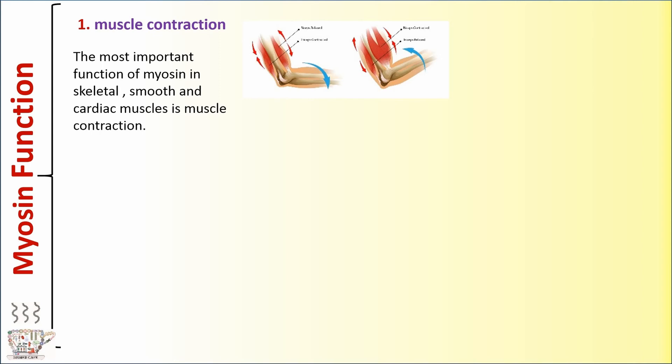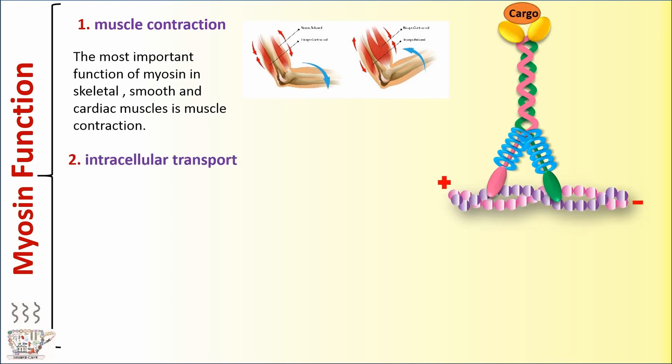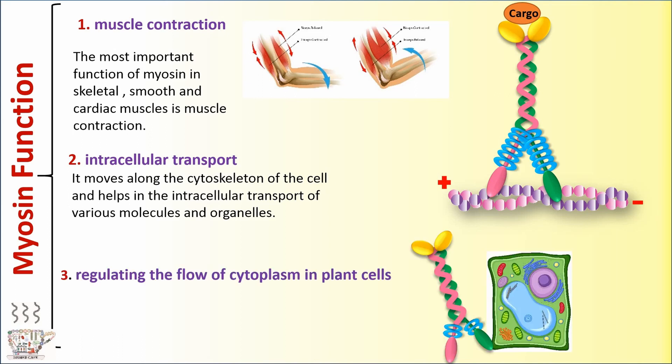Myosin function. The most important function of myosin in skeletal, smooth, and cardiac muscles is muscle contraction. Number two, intracellular transport. It moves along the cytoskeleton of the cell and helps in the intracellular transport of various molecules and organelles. And number three, regulating the flow of cytoplasm in plant cells.